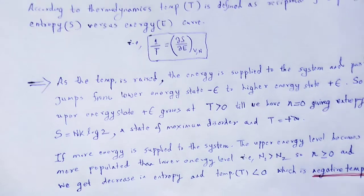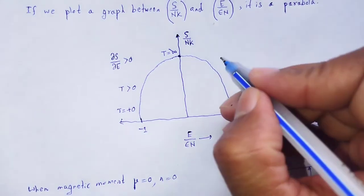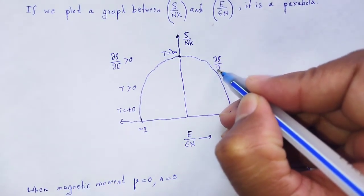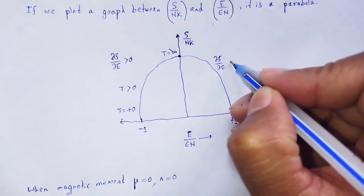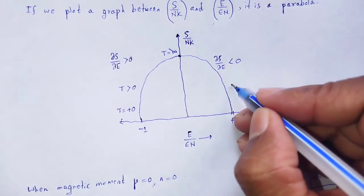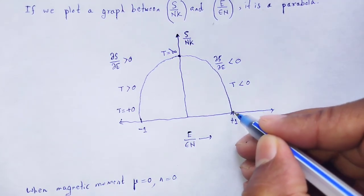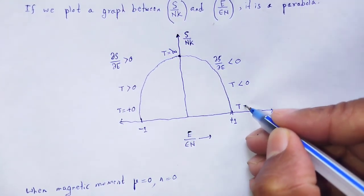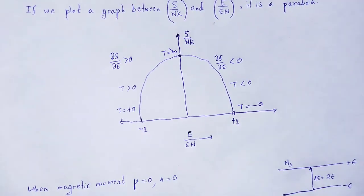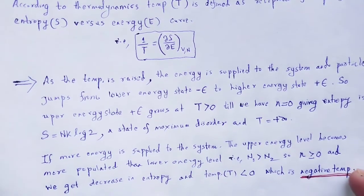In that graph, the entropy gradually decreases and T decreases at that point. We obtain negative temperature, which is the concept of negative temperature.